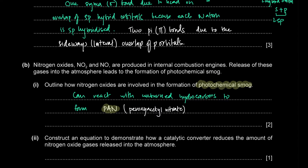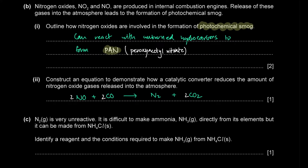In a catalytic converter, nitrogen monoxide reacts with carbon monoxide to form nitrogen gas and carbon dioxide: 2NO + 2CO → N2 + 2CO2. The toxic gases nitrogen monoxide and carbon monoxide are converted into the relatively harmless products nitrogen and carbon dioxide.